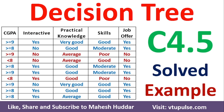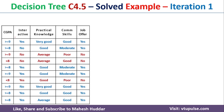Welcome back. In this video, I will discuss how to use the C4.5 decision tree learning algorithm to build a decision tree with a simple solved example. This is the dataset given to us. It has four attributes: CGPA, interactiveness, practical knowledge, and communication skills. Job offer is the target class, with two possibilities: yes or no. There are totally 10 examples given to us.